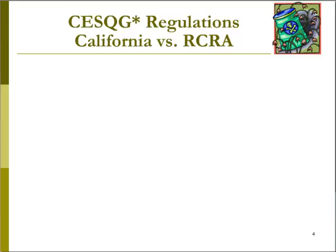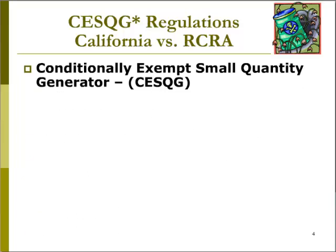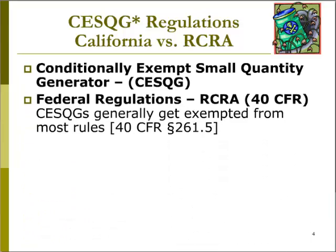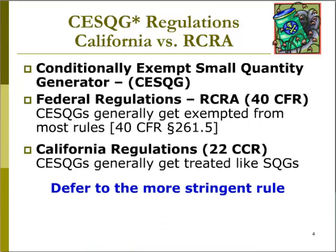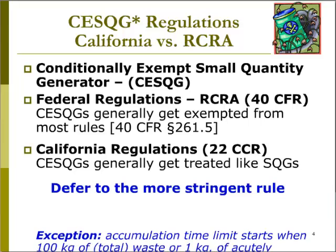California vs. RCRA hazardous waste generator categories. In federal regulations, under the Resource Conservation Recovery Act, or RCRA, there is a category of hazardous waste generator called conditionally exempt small quantity generator. Conditionally exempt small quantity generators, or CESQGs, are exempt from most generator requirements under federal regulations. However, in California, a CESQG of federally regulated waste is regulated almost the same as a California small quantity generator, as the more stringent California rules apply.